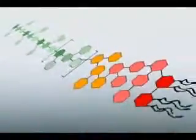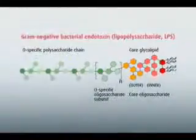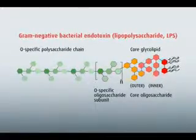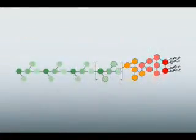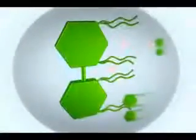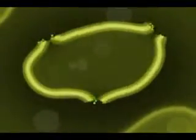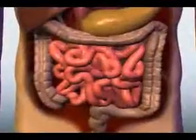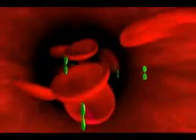Endotoxin is also known as lipopolysaccharide. The lipid A portion of endotoxin is the same for all gram-negative bacterial species, which is why it is the target for the EAA. There are two potential sources of endotoxin in the bloodstream: the first is infection with gram-negative bacteria, and the second is endotoxin translocating across the GI tract.